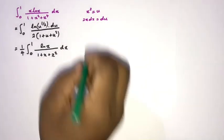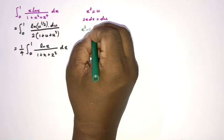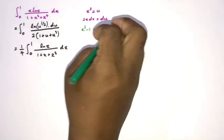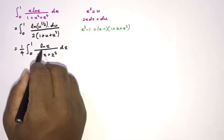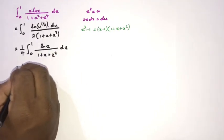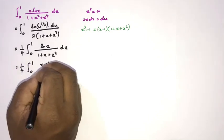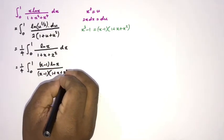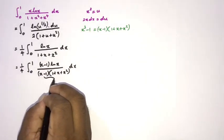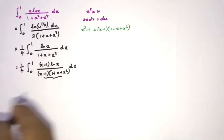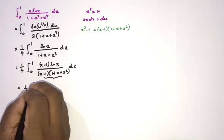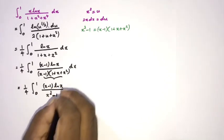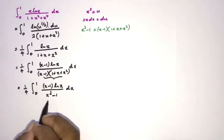We know from the difference of cubes formula that x³ − 1 = (x − 1)(1 + x + x²). So we multiply numerator and denominator by (x − 1), giving (1/4) integral from 0 to 1 of (x − 1) ln(x) over (x − 1)(1 + x + x²) dx. The denominator becomes x³ − 1, so we have (1/4) integral from 0 to 1 of (x − 1) ln(x) over (x³ − 1) dx.